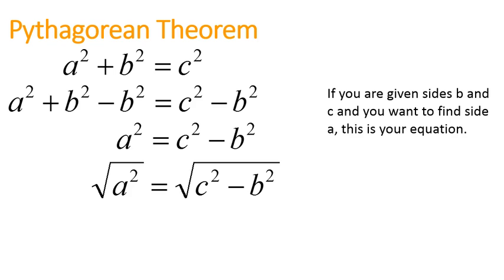Then, we'll take the square root of both sides of the equation, because the square root of a² leaves us with a. So, here's the equation that we would use if we're trying to solve for the value of a. One of the sides of the triangle, a, we would take the square root of c² - b².